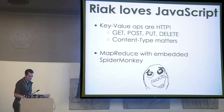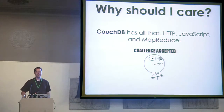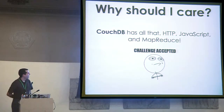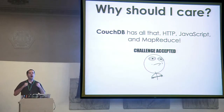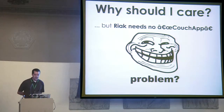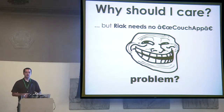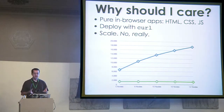This makes us very happy. But you're saying, why should I give a care? CouchDB has HTTP, it has JavaScript, it has MapReduce. Well, we accept that challenge. I'm going to throw down a little gauntlet — I love CouchDB, and I saw J. Chris here a minute ago. But CouchDB has this statement where they say 'CouchDB is made of the web.' I'm going to say that Riak doesn't need a Couch app. Since Riak uses pure HTTP, you don't have to have a separate abstraction to build your application. You can build completely in-browser apps.